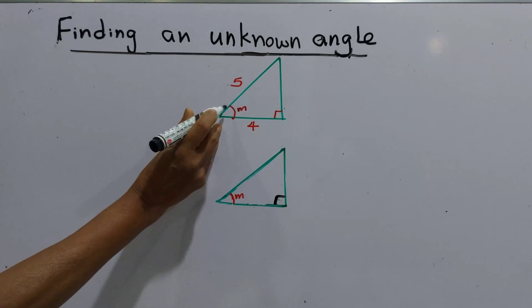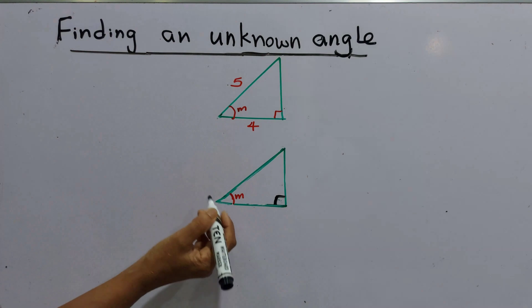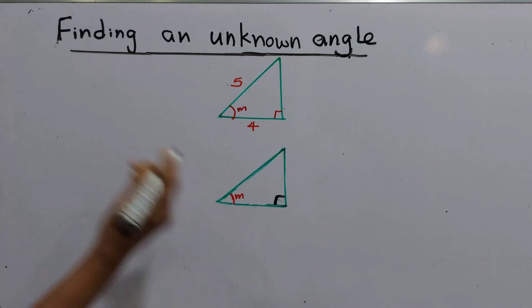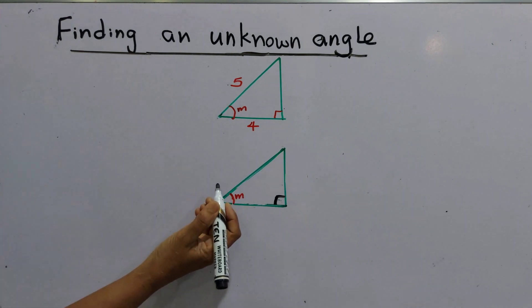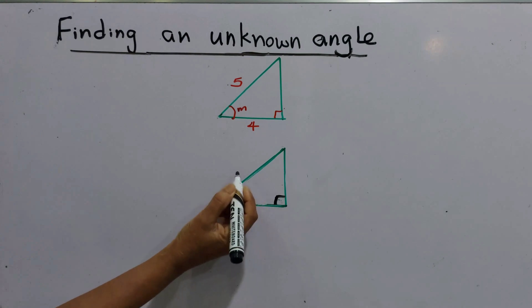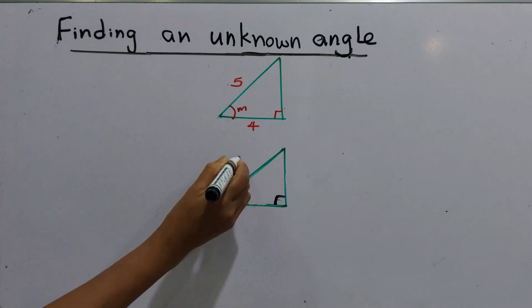Then first step is we have to label the sides of the triangle. We already know when there's a right angle triangle, the side opposite side of the right angle is hypotenuse that is we name as H.